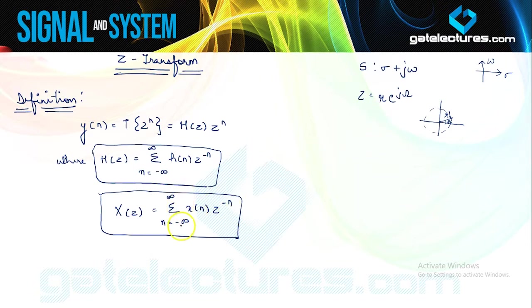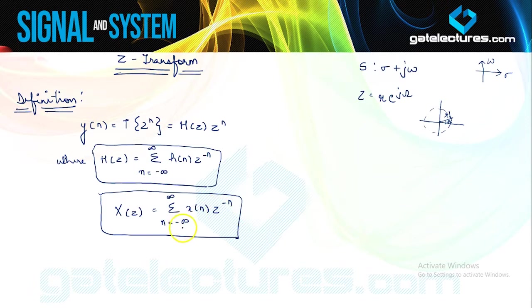Since the limits are from minus infinity to infinity, this is also called the bilateral or two-sided Z-transform. Just as we discussed unilateral Laplace transform, we have a unilateral Z-transform as well, where limits would be from 0 to infinity. Similar to Laplace, we are going to discuss unilateral Z-transform in a separate section. For now, we are going to focus on the bilateral Z-transform.